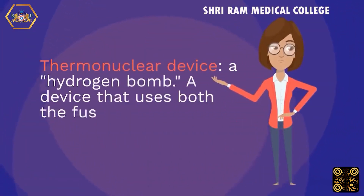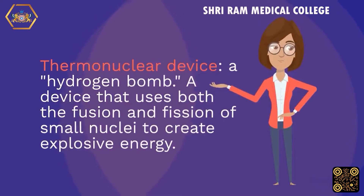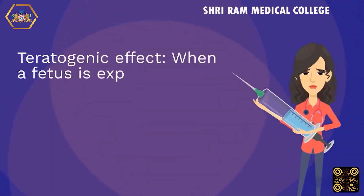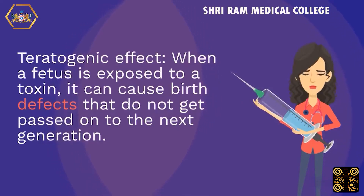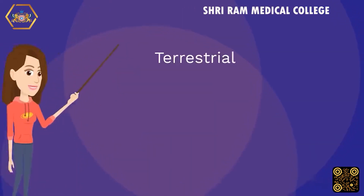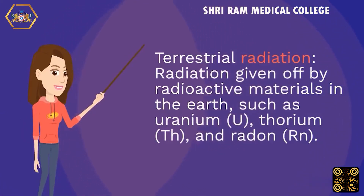Thermonuclear device: a hydrogen bomb; a device that uses both the fusion and fission of small nuclei to create explosive energy. Teratogenic effect: when a fetus is exposed to a toxin, it can cause birth defects that do not get passed on to the next generation. Terrestrial radiation: radiation given off by radioactive materials in the earth, such as uranium (U), thorium (Th), and radon (Rn).